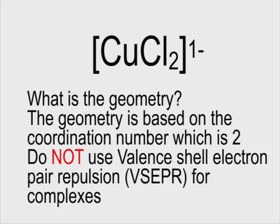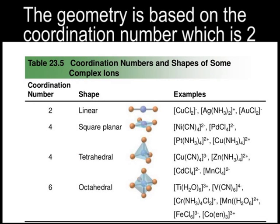Now, the next question is, what is the geometry? Now, when it comes to complexes, our geometry is based on the coordination number. We do not use the valence shell electron pair repulsion, the VSEPR theory, for complexes. We do use it for other molecules, but not for complexes. For complexes, we simply use the coordination number to get to the geometry. So this table gives you an overview.